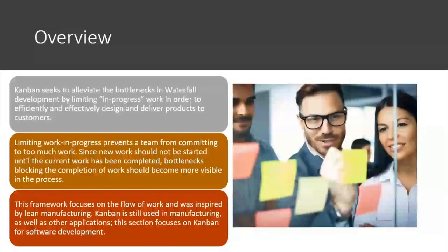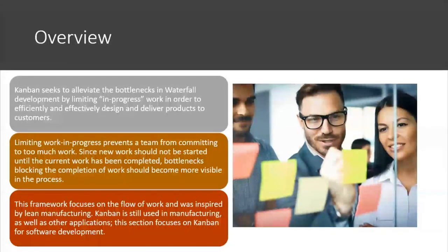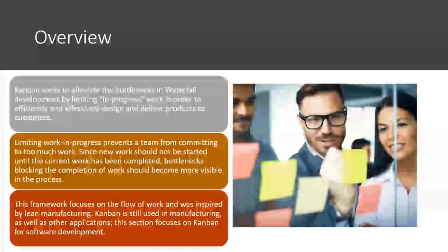Kanban seeks to alleviate bottlenecks by limiting in-progress work to efficiently and effectively design and deliver products to customers. Limiting WIP prevents a team from committing to too much. Since new work should not be started until the current work has been completed, bottlenecks blocking completion should become more visible. There's a term we use to describe what we do in our heads: we stop starting and we start finishing. This framework focuses on the flow of work and was inspired by lean manufacturing. Kanban is still used in manufacturing as well as other applications.